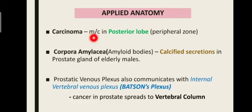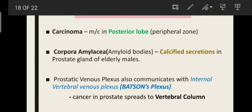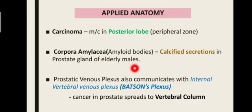Now for applied anatomy, first is carcinoma of the prostate gland. It most commonly affects the posterior lobe, and this carcinoma can spread to the vertebral column through the communication between the prostatic venous plexus and Batson's plexus. There is also a condition called corpora amylacea, in which the secretions of the prostate gland become calcified, producing amyloid bodies. This is most commonly seen in elderly males.